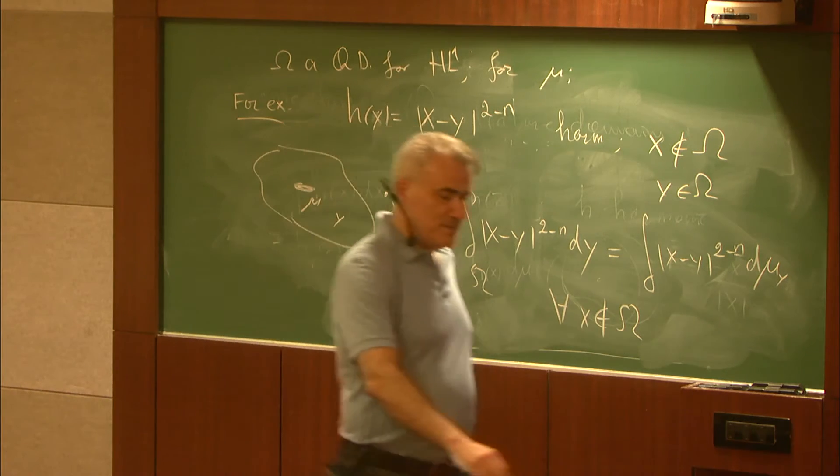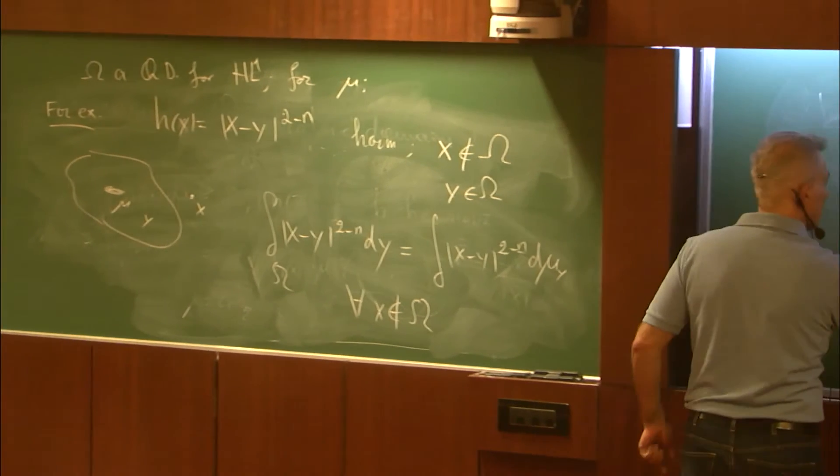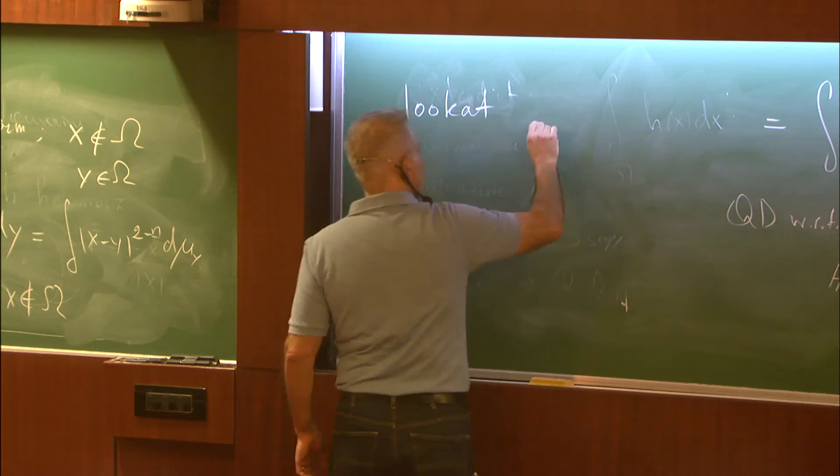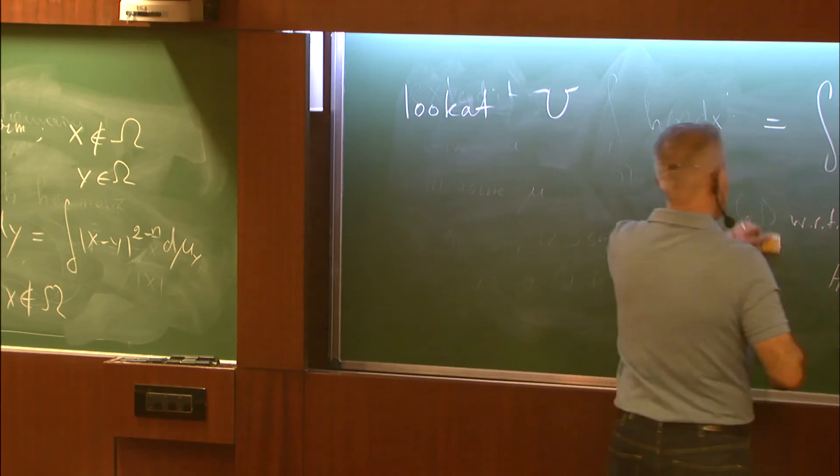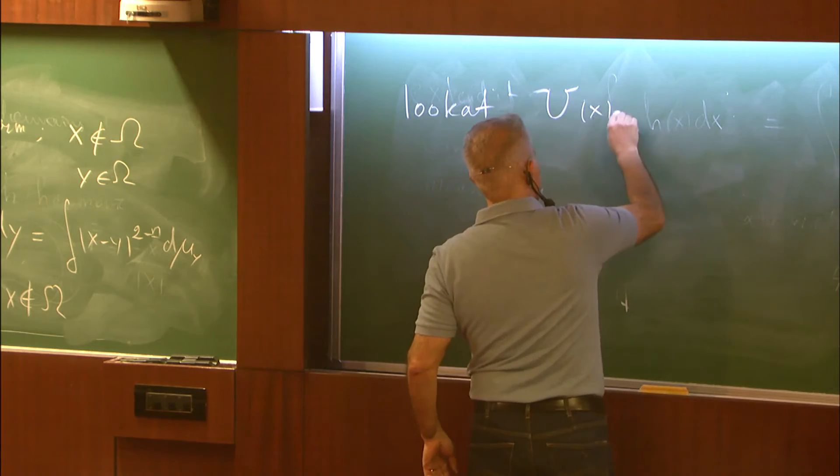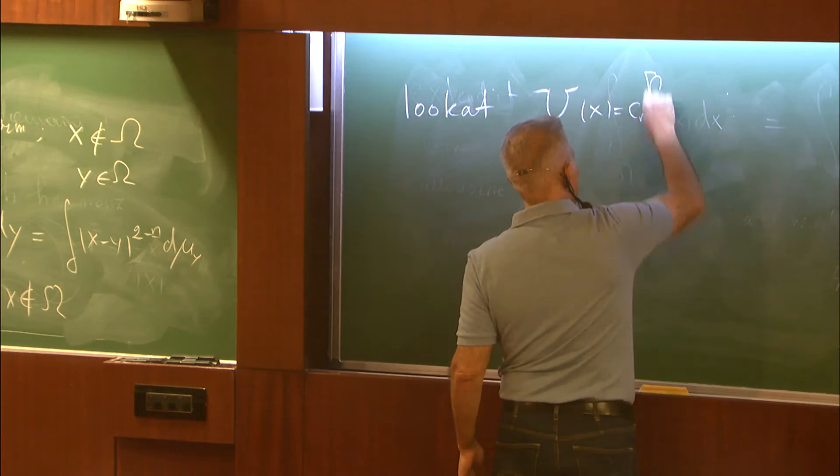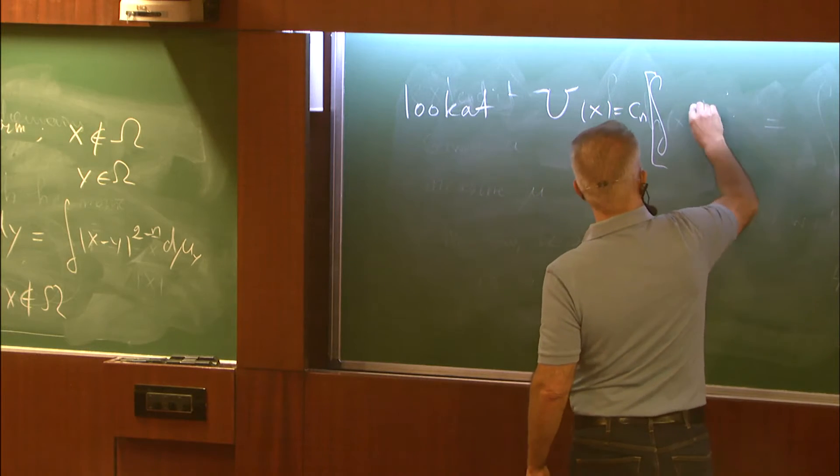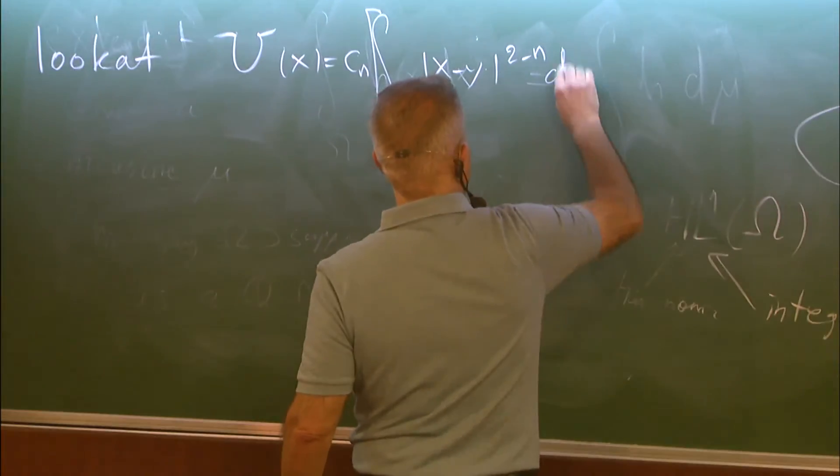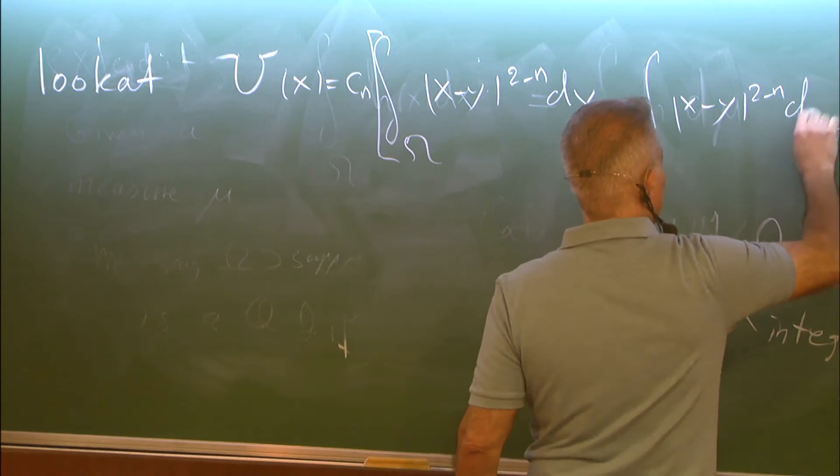What happens here is that you can actually look at this function. Look at the function u(x) being the difference of these two functions up to a constant c_n. The integral of |x-y|^(2-n) over omega dy minus the integral of |x-y|^(2-n) dμ.